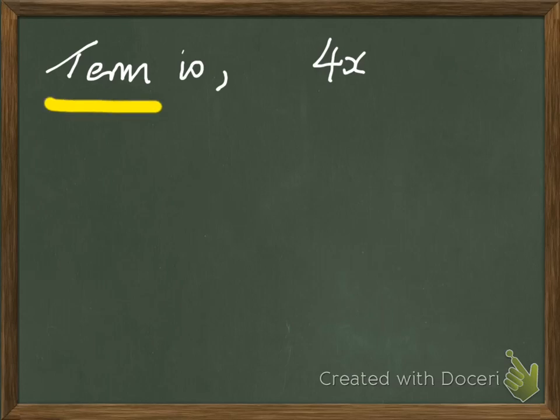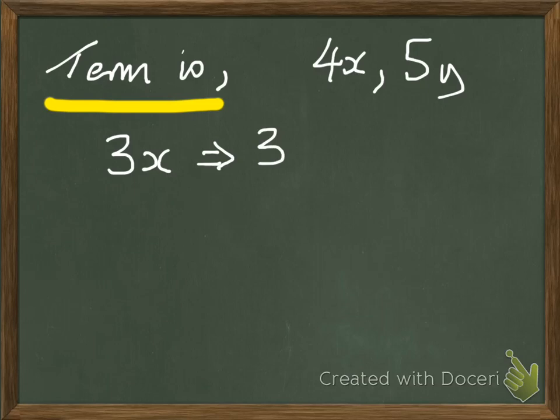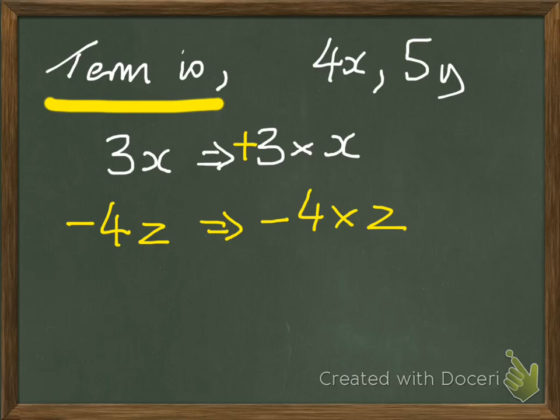So firstly, we've got the idea that a term is something like 4x or 5y. We've also got the idea that if we were to write, say, 3x, that actually means 3 times x. And the other thing that we can assume with this is that because there is not a minus written here, then that actually means plus 3x. Or in mathematics, we'd make it very, very clear, and we'd put a minus, and let's say we have a 4z, and that means minus 4 times z. So we've got terms, and we've got an idea of some notation here.